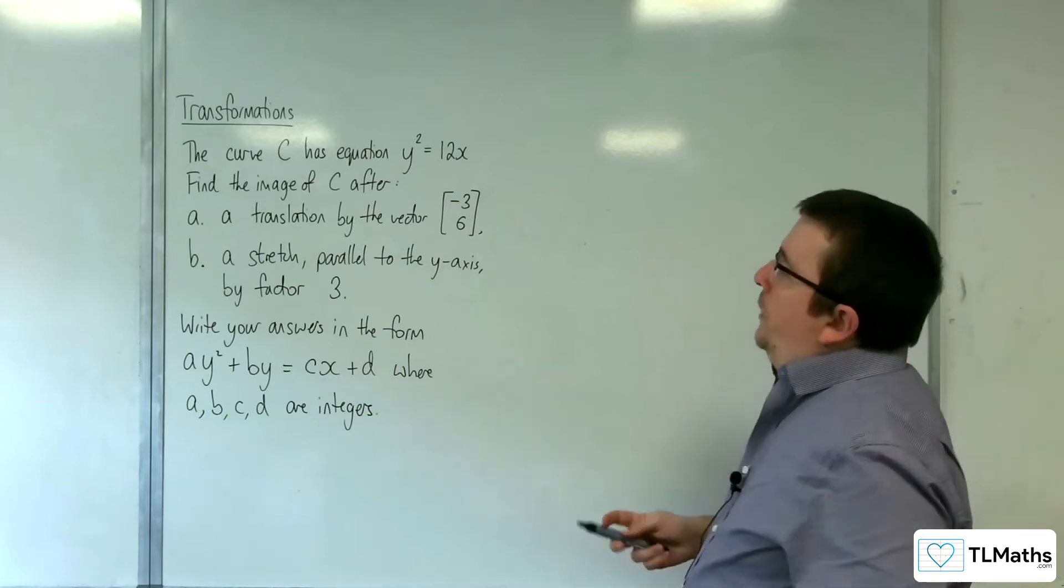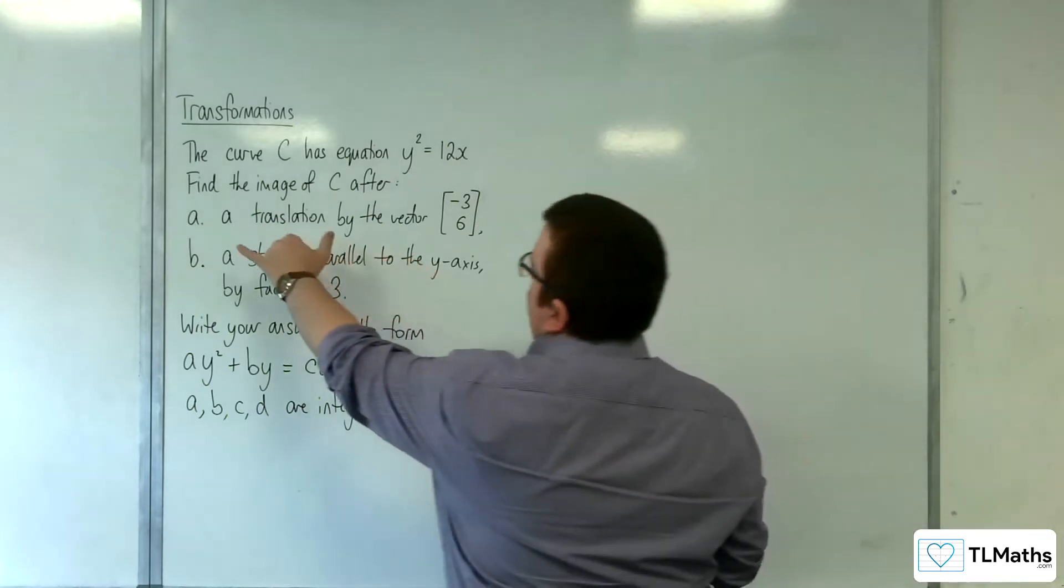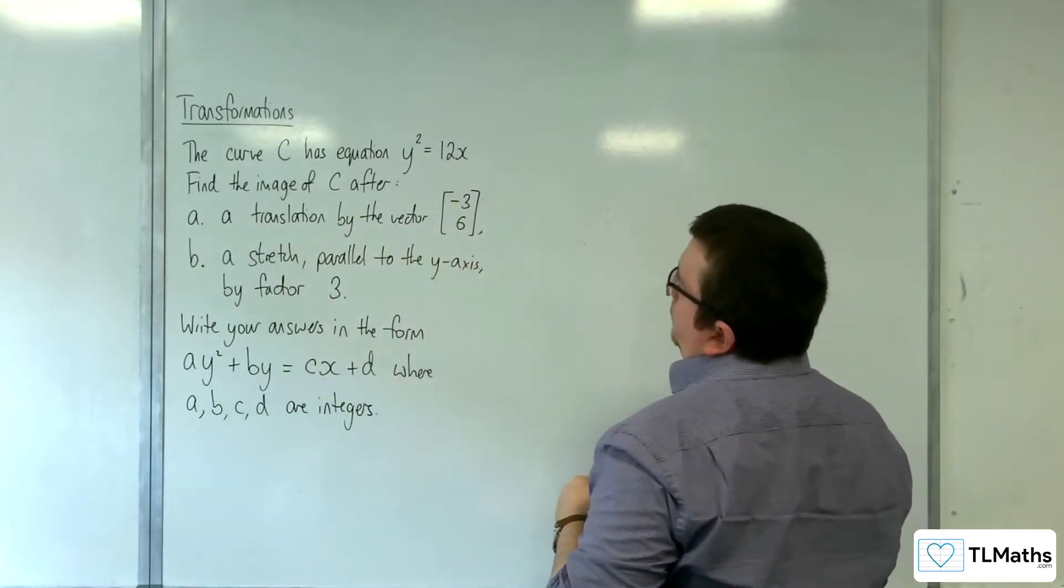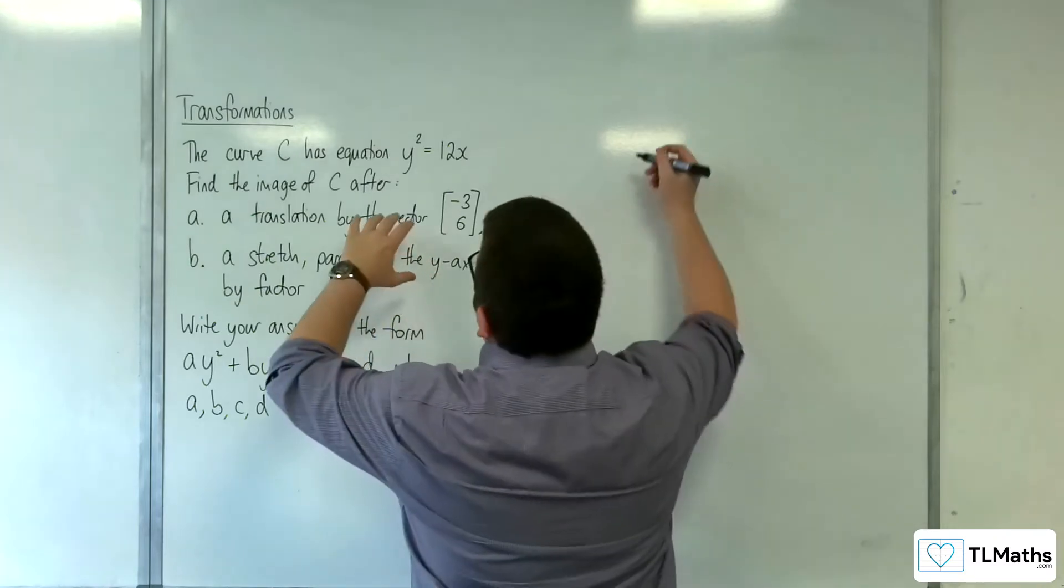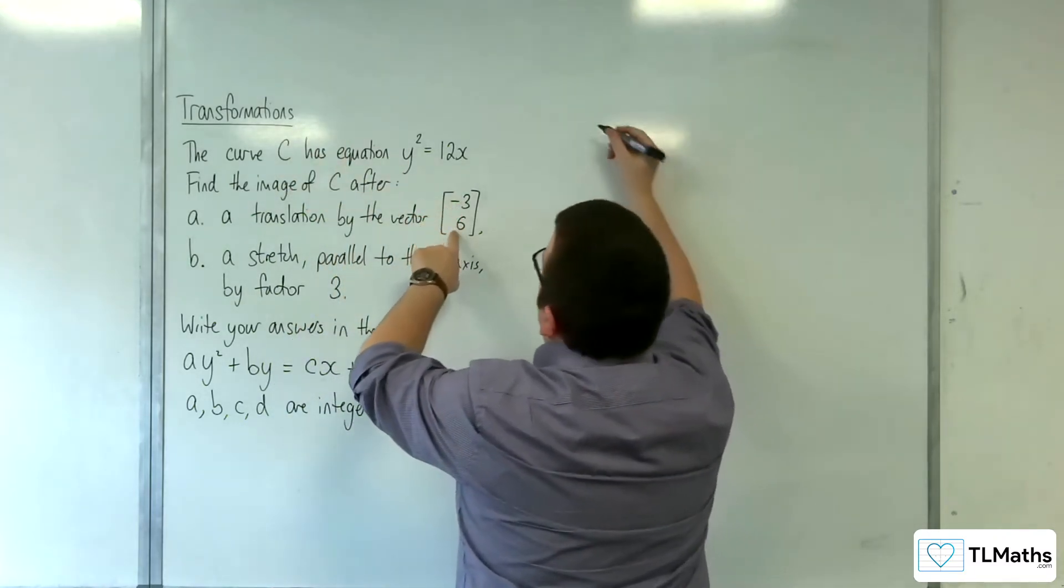The first thing is to translate the graph by the vector (-3, 6). That means we're going to replace x with x + 3 and replace y with y - 6. So (y - 6)² = 12(x + 3).